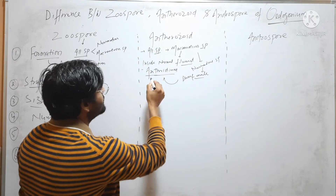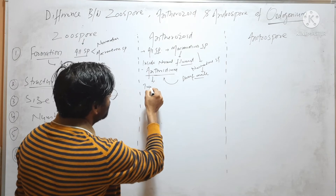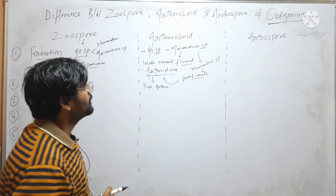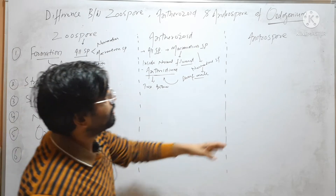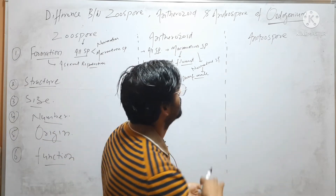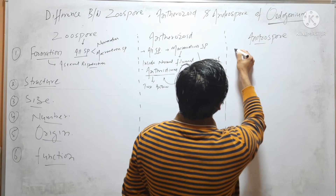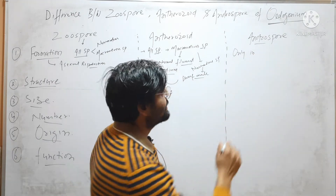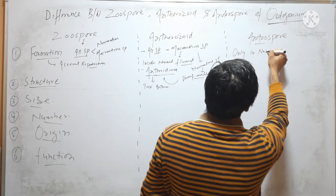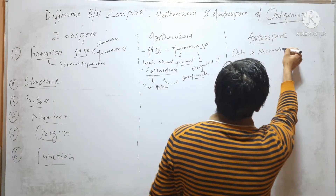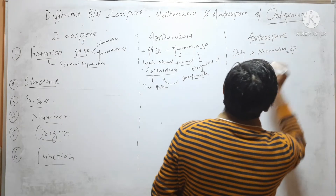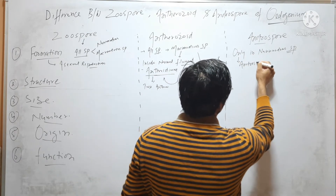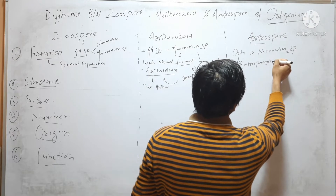Inside each Antheridium, two Antherozoids are formed. Androspore is formed only in Nanoandrous species, and it is formed inside Androsporangium.